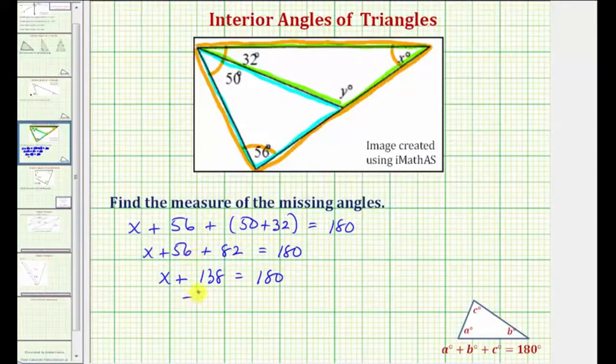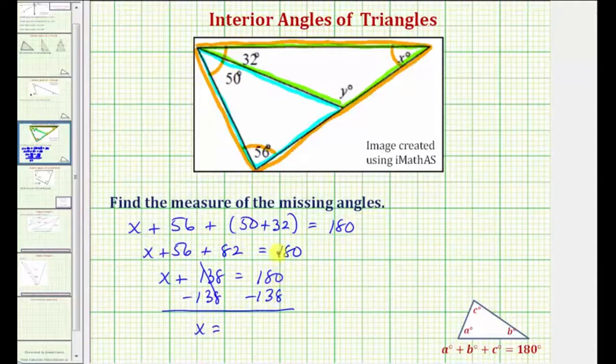And finally solving for x, we subtract 138 on both sides, giving us x equals 180 minus 138 is equal to 42. So if x equals 42, we now know the measure of this angle is 42 degrees.